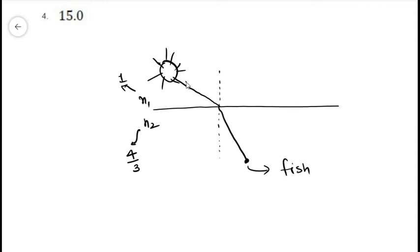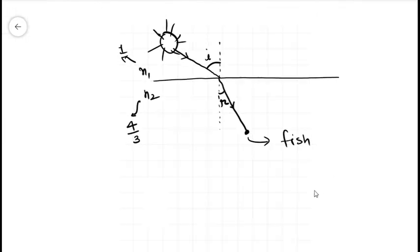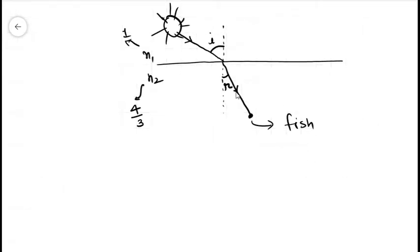The light ray from the rarer medium when it moves towards the denser medium will move towards the normal. Let's say this angle is i and this angle is r. So what is the angular speed which is perceived by the fish?